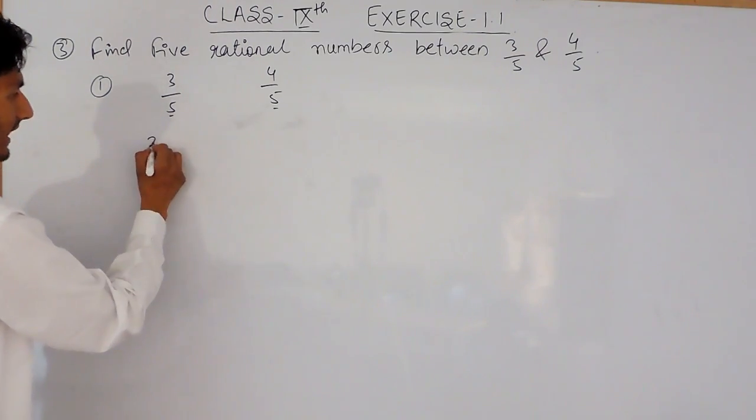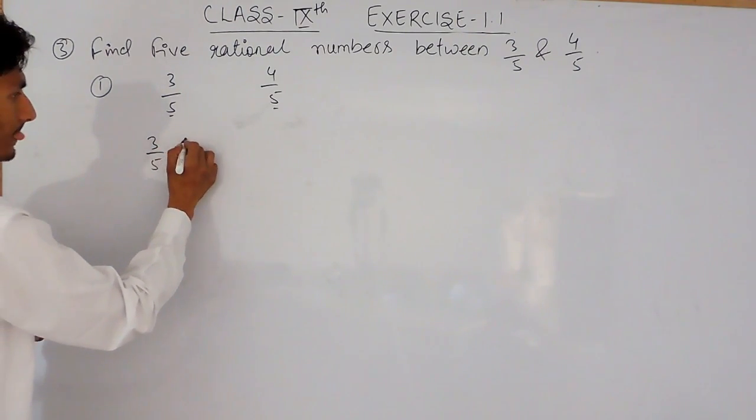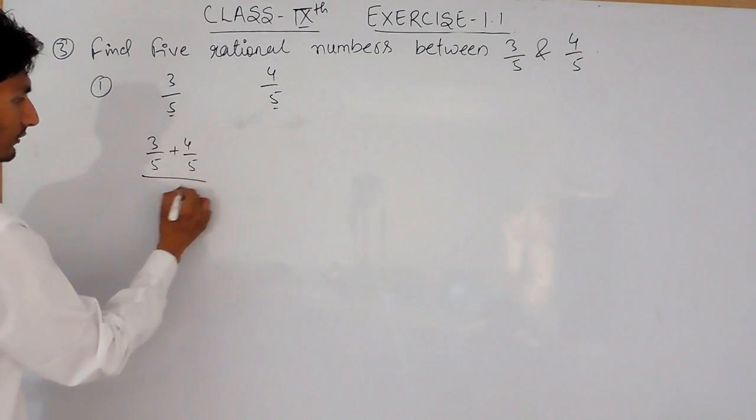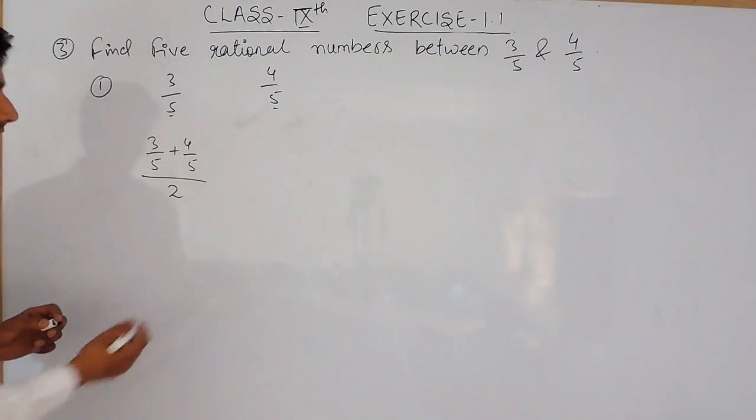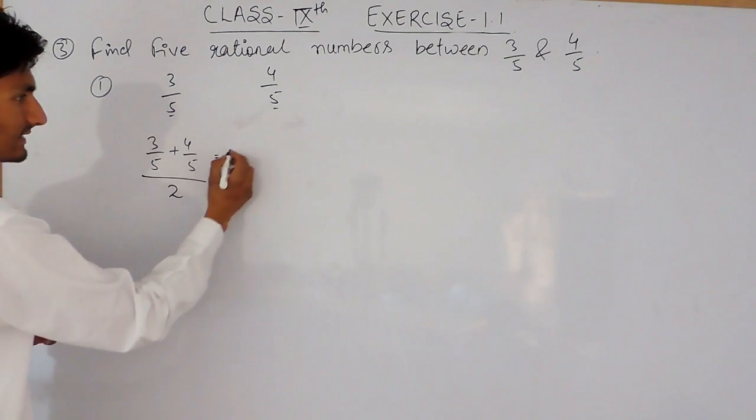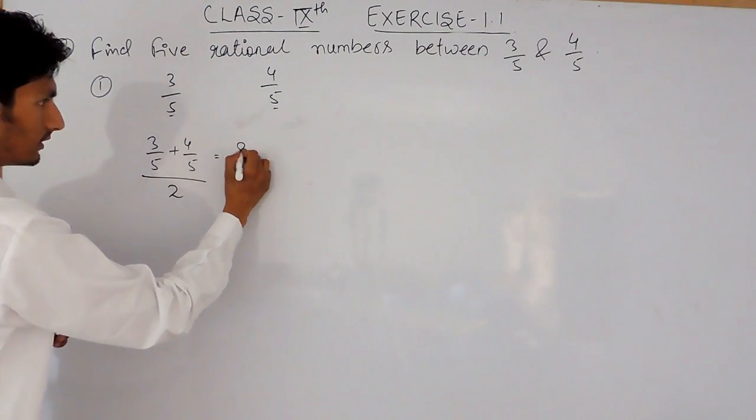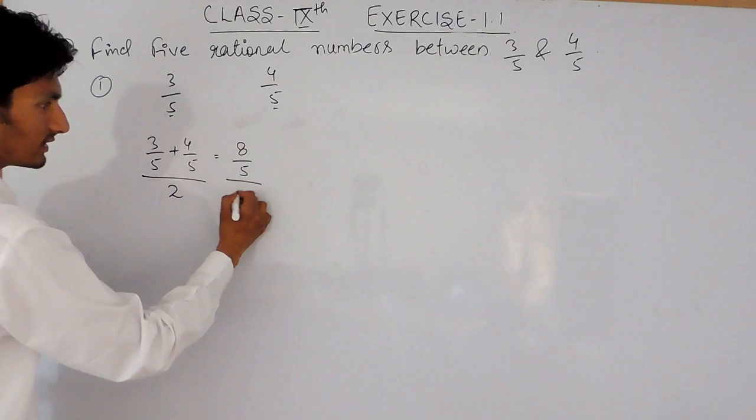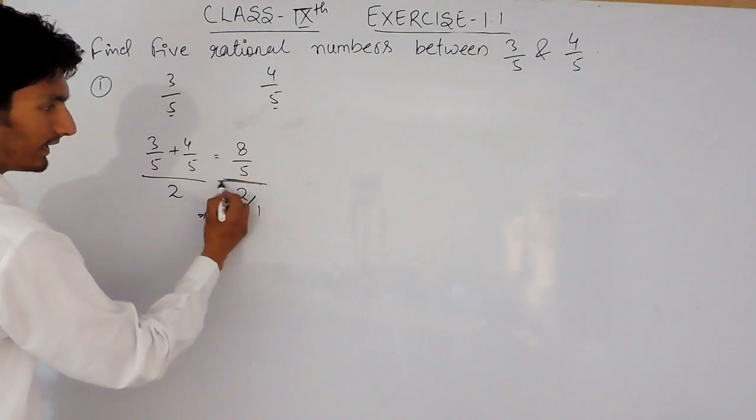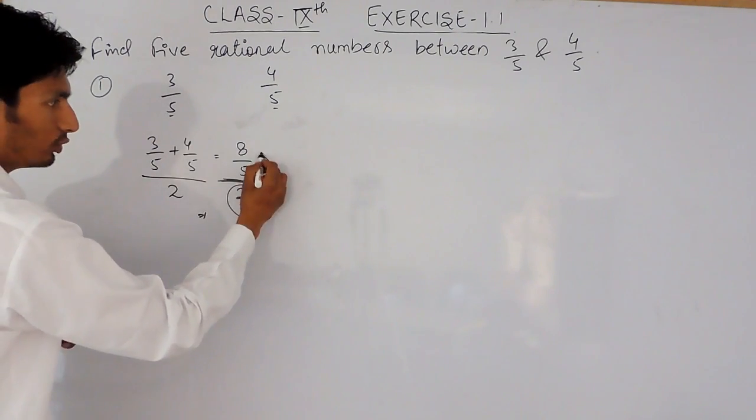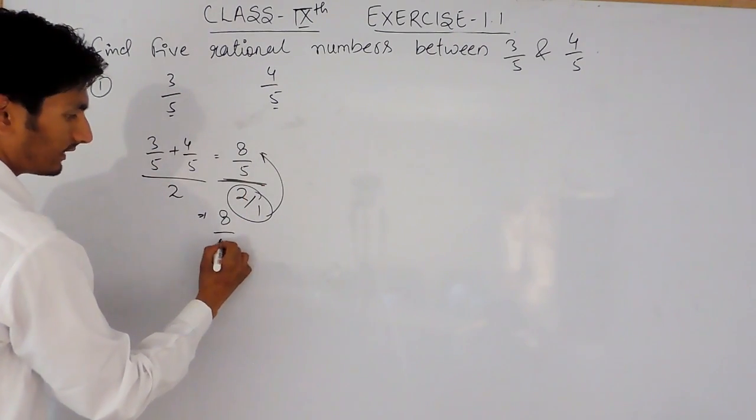First of all you have to add these two numbers and then you have to divide this by 2. After taking LCM, when you shift it to the numerator, it gets reciprocal.